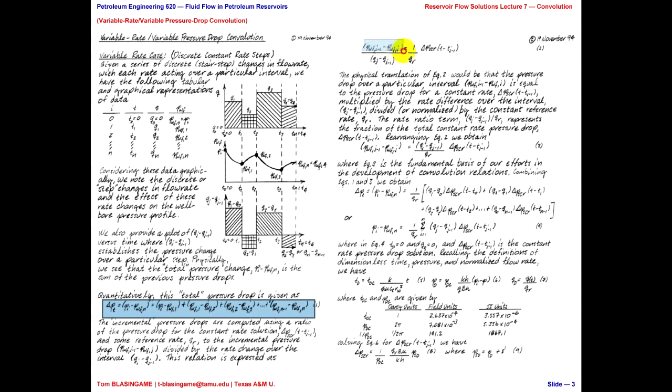Why is this important? Because we know that the total pressure drop in any given system is a summation of pressure drops across each segment. The trick is figuring out what each segment's pressure drop is. So, there's a relationship that says the pressure drop over a given segment divided by the rate change over that segment is equal to 1 over the reference rate multiplied by the pressure drop for a particular model. This is the constant rate model. That is called the convolution time.